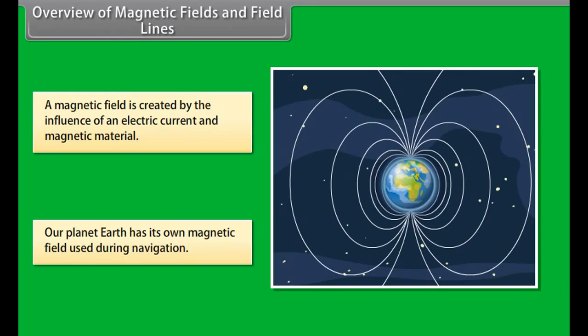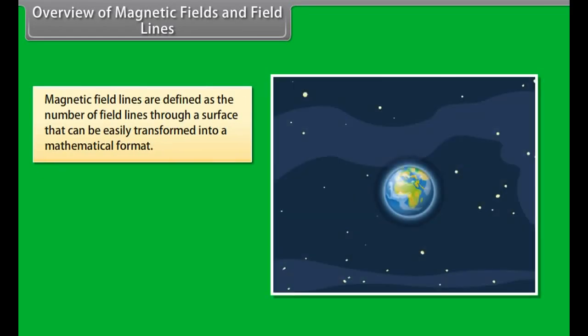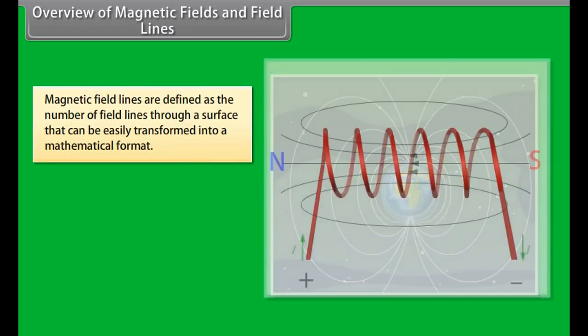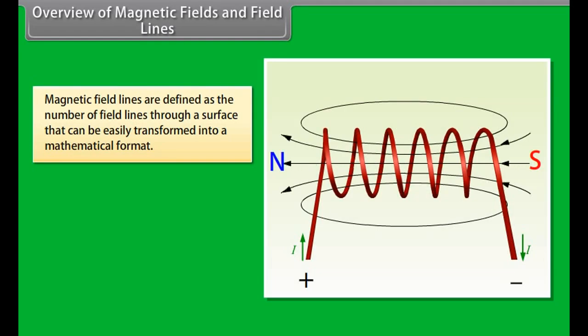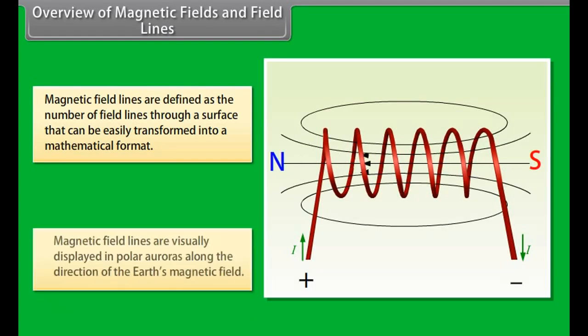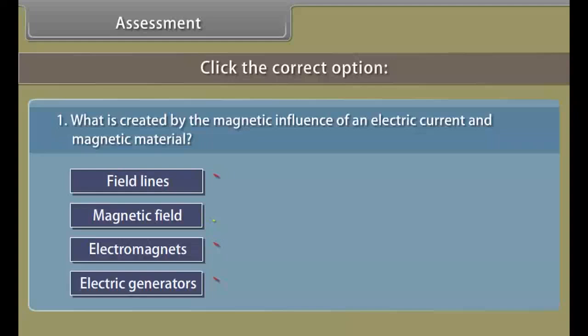Magnetic field lines can be compared to the constant altitude lines that are visible on a map. Magnetic field lines help in stating simple concepts of magnetism easily. These are defined as the number of field lines through a surface. These can be easily transformed into a mathematical format. Magnetic field lines are visually displayed in polar auroras where visible streaks of lines are created along the direction of Earth's magnetic field.